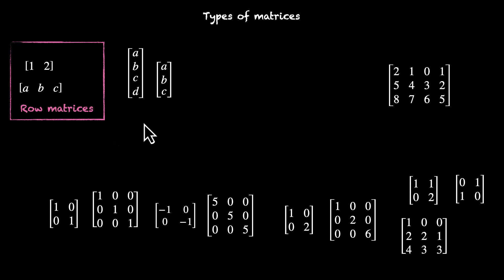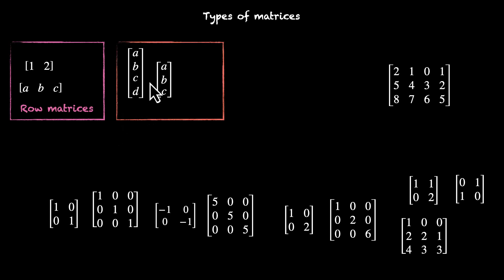What makes these two special? All the elements are along the column — they have only one column. These types of matrices are called column matrices.